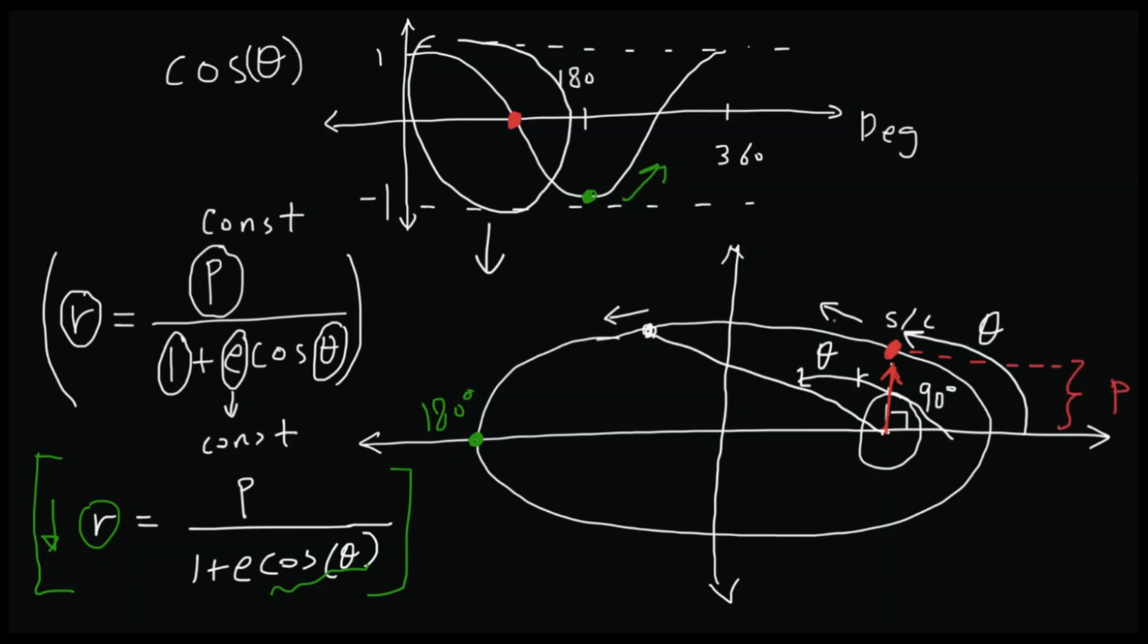And then as the spacecraft is moving in the counterclockwise direction, theta is increasing, and we can see r is increasing as well. The distance is increasing. So there you have it. Our majestical equation. And you guys know what it means.